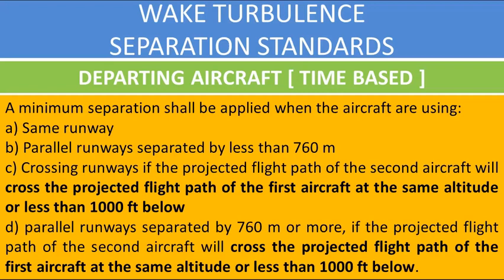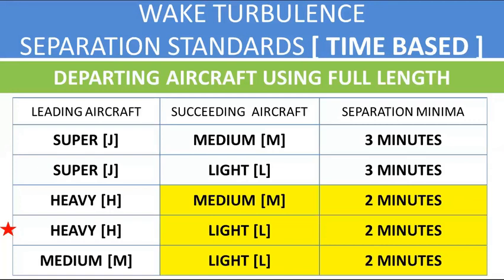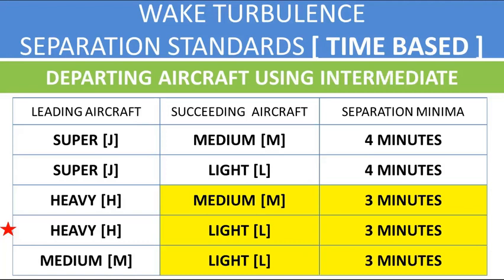Separation also applies when the projected flight path of the second aircraft will cross the projected flight path of the first aircraft at the same altitude or less than 1,000 feet below. A separate table is used for applying time-based wake turbulence separation between departures using full runway length, and another for intermediate runway length — for example, if a light aircraft is departing behind a heavy aircraft, three minutes of wake turbulence separation is needed.